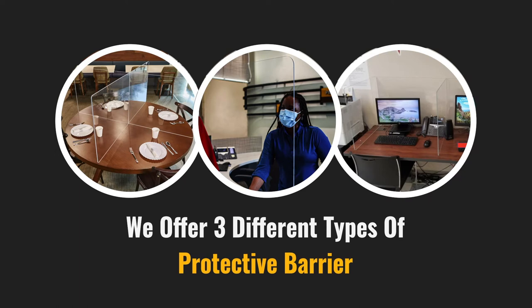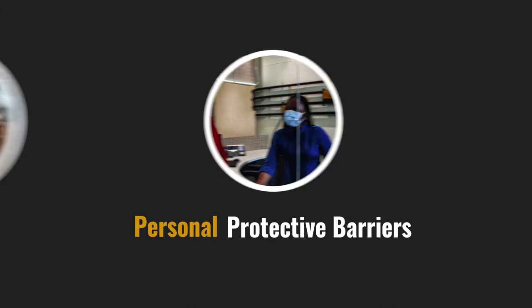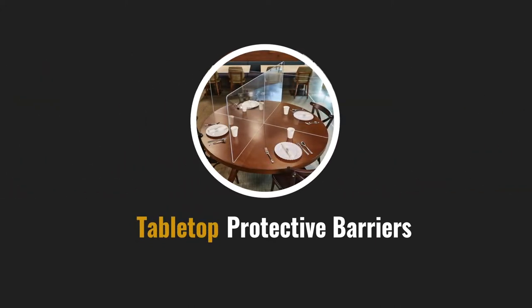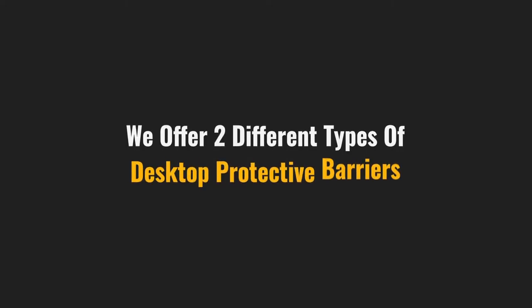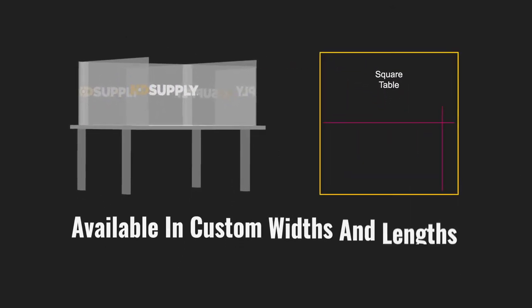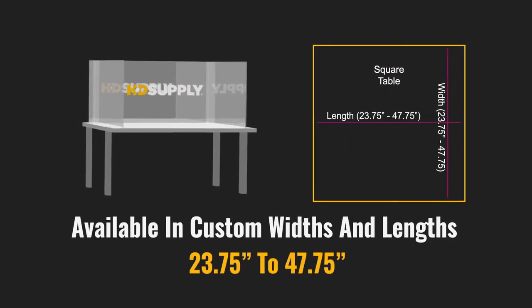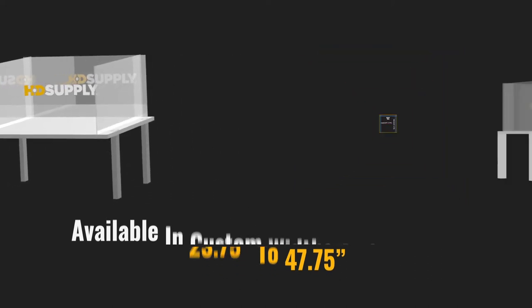At HD Supply, we have three different types of protective barriers available: personal protective barriers, tabletop protective barriers, and desktop protective barriers. Our desktop protective barriers are offered for two different types of tables: square and rectangular. Square tables are available in custom widths and lengths from 23 and 3/4 of an inch to 47 and 3/4 of an inch.